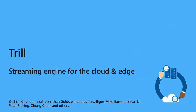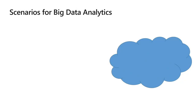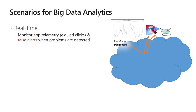Let's start with a brief description of Trill. Many of you may be familiar with it from several years back. It was a project we started in 2012, and its goal was to be a streaming engine for both the Cloud and the Edge. Many big data analytics scenarios across Microsoft drove this project, including real-time monitoring of applications and the exhaust generated by cloud applications for raising alerts when problems are detected.